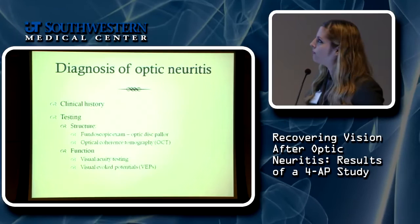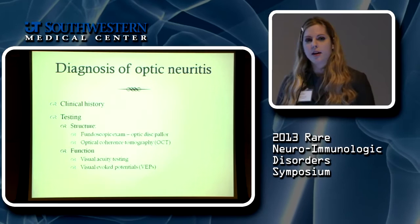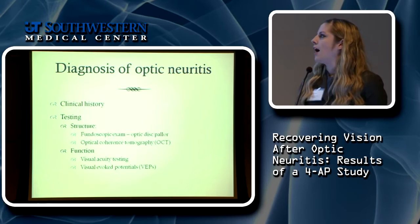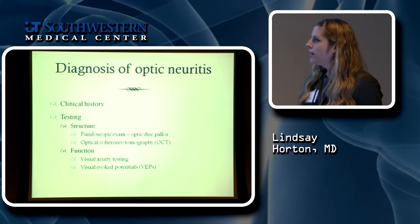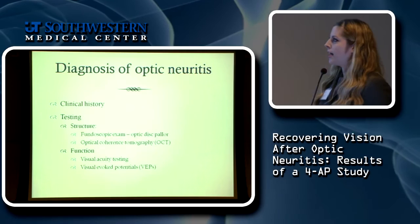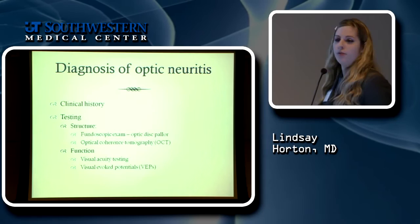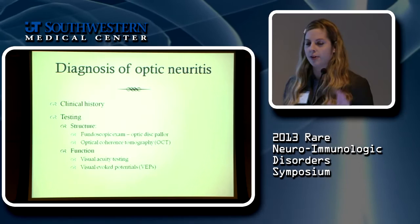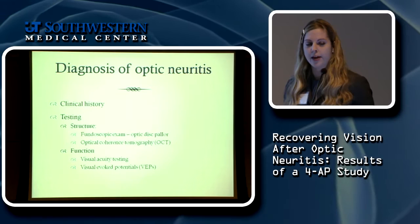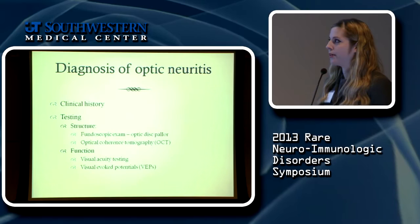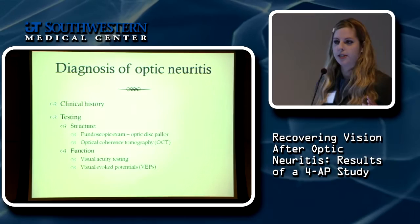How does your physician know you've had optic neuritis? A lot of the diagnosis is based on clinical history — what you tell them. However, there's also lots of testing we can do. To look at the actual structure of the optic nerve, your doctor can do a fundoscopic exam, shining a bright light in the back of your eye to look at the optic disc and see if it's pale. We also have a tool called optical coherence tomography — OCT — which tells us much more about the structure of the optic nerve.